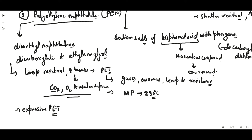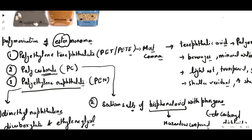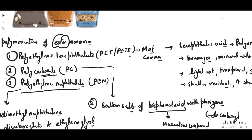So these are the important types of polyester and polyolefin plastics used in the food industry. They have very special properties like water resistance, gas resistance, and high melting points. That's all for today.